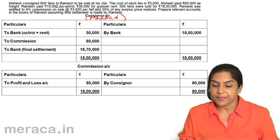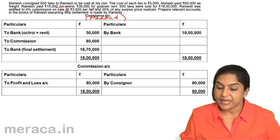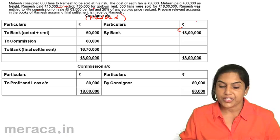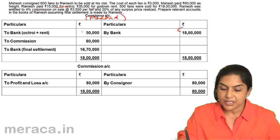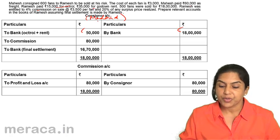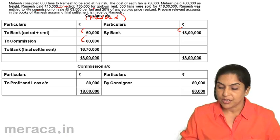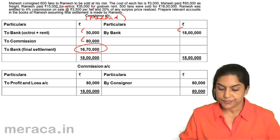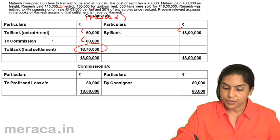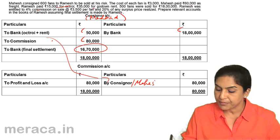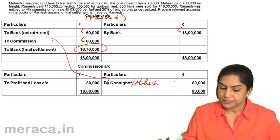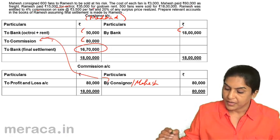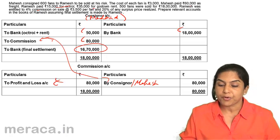Sales were 18 lakh; money comes in — bank account debit and Mahesh's account is credited. For expenses paid, Mahesh's account is debited to bank. Commission had already been computed at 80,000 — so to commission is 80,000. Final settlement: Mahesh's account debit to bank, assuming a cheque was issued. The commission account is an income; Mahesh's account was debited — it's posted to the consignor or Mahesh's account as 80,000. This 80,000 is closed by transfer to profit and loss account.